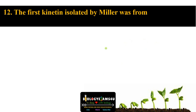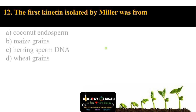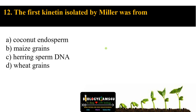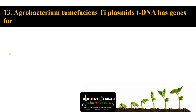Question number twelve: the first kinetin isolated by Miller was from option A coconut endosperm, option B maize grains, option C herring sperm DNA, option D wheat grains. Often we think of plants, but the answer is herring sperm DNA — option C.